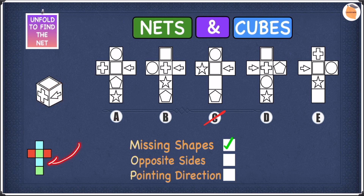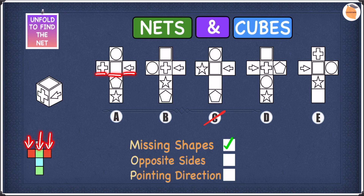We also have a net which shows the opposite sides for this particular type of net. In A, we have the arrow, the square in the middle, and the plus sign at the end. The plus sign and the arrow are both on the same colour, and as we said before, same colour means opposite sides. So the arrow and the plus sign are on opposite sides — we can cross off A, because they're meant to be next to each other, not on opposite sides.